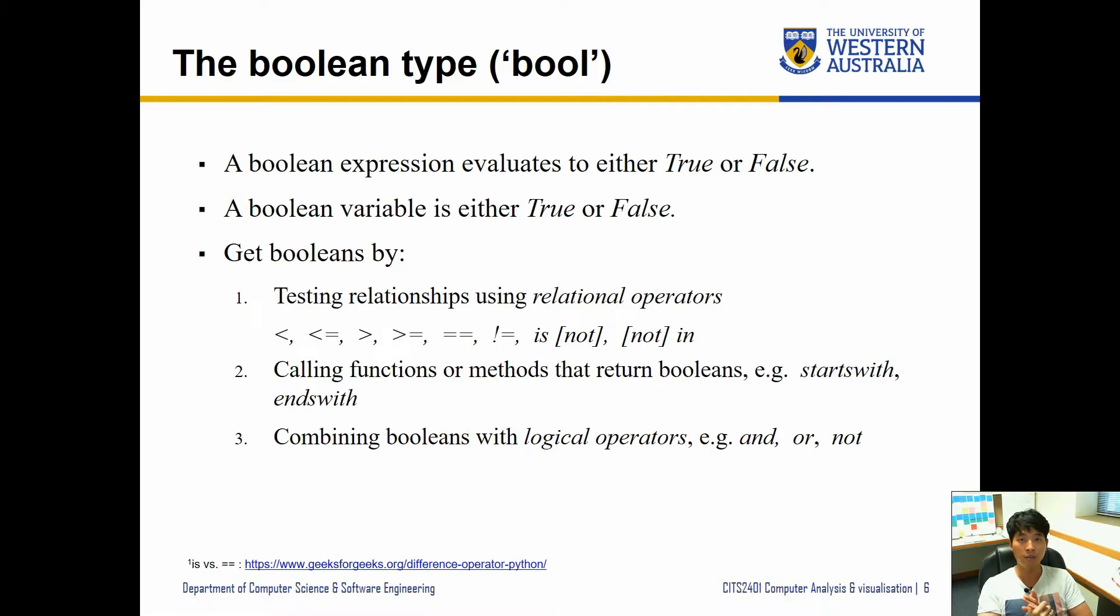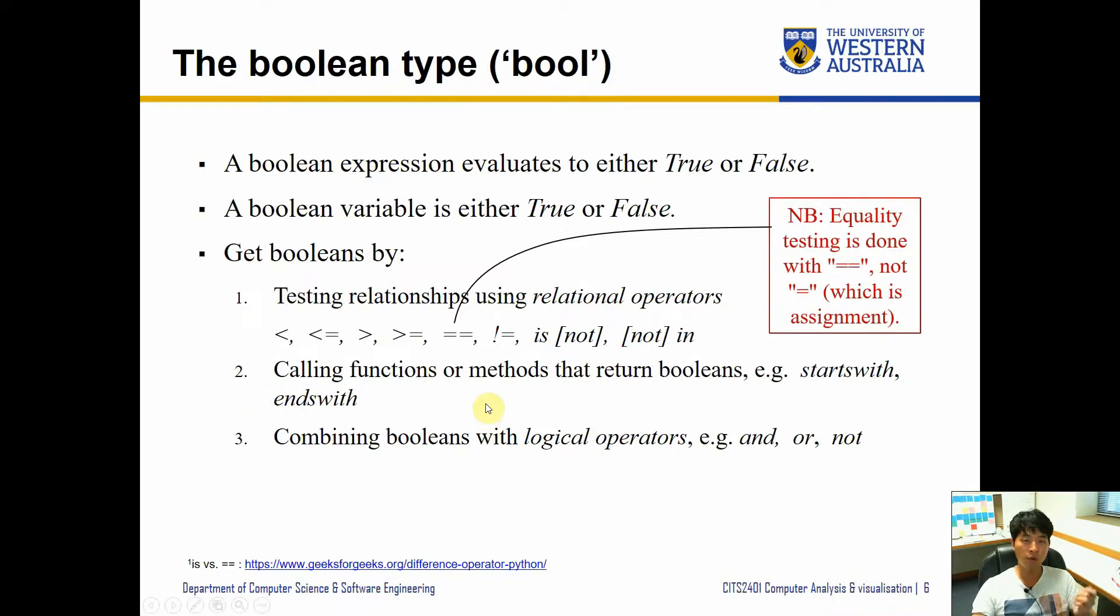Do note that when you do equality testing, we use two equal signs. If we use a single equal sign, that means it's an assignment expression where we calculate the right hand side and store that onto the left hand side. Remember to always use double equal signs to check for equality rather than assigning.